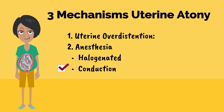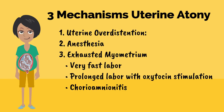The second mechanism is anesthesia — such as halogenated agents and conduction anesthesia — that can lead to hypotension. The hypotension causes a decrease in circulating oxytocin, which decreases uterine contraction. The third mechanism is the result of an exhausted myometrium, which can happen in the setting of a very fast labor, prolonged labor with oxytocin stimulation, and chorioamnionitis.